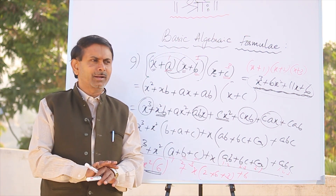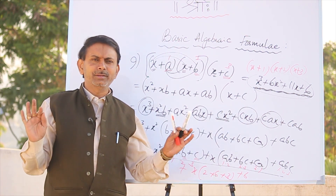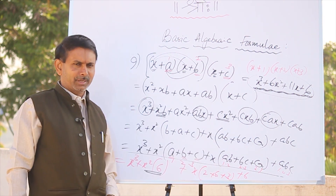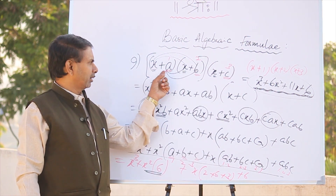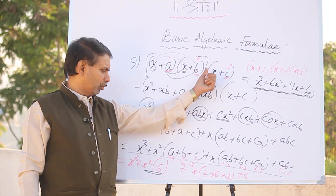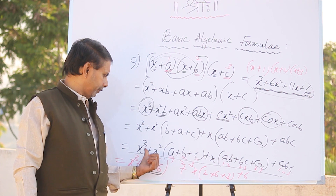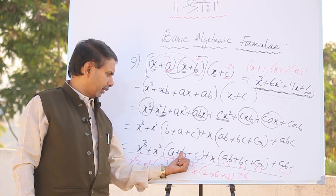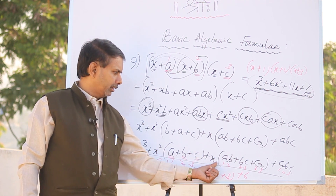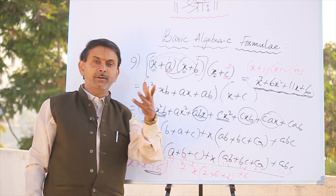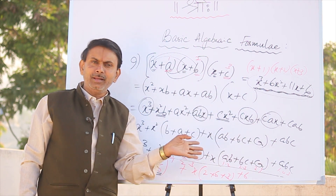You will find it very very easy in such expansion. X plus a, X plus b, X plus c — multiple. X cube plus X square into a plus b plus c, plus X into ab plus bc plus ca, plus abc. Standard formula proof.